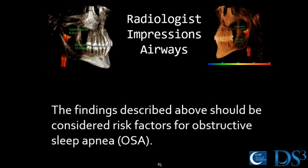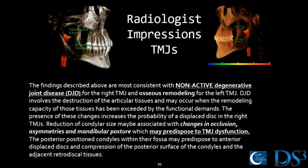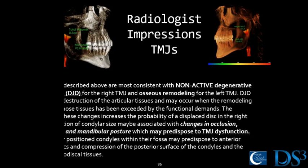Radiologists go through what they see and then give their impressions. For this particular case, regarding the airway, the findings should be considered a risk factor for obstructive sleep apnea. As they looked at that minimal cross-section area, the conclusion was that the patient is at risk for obstructive sleep apnea. We give a copy of this to our patient if they hadn't been tested. Do you think that would help some of our offices or even yourself, Rich, with a resistant patient? Over the years, I can tell them something, but when you have a separate radiologist evaluating the image and doing all of this, it carries a lot more weight.